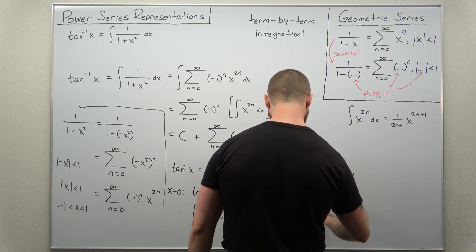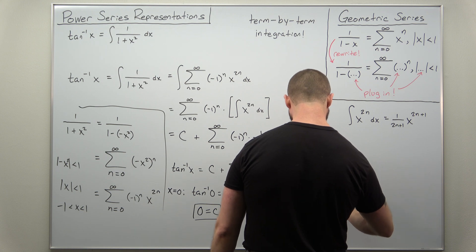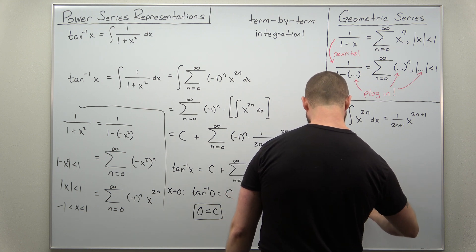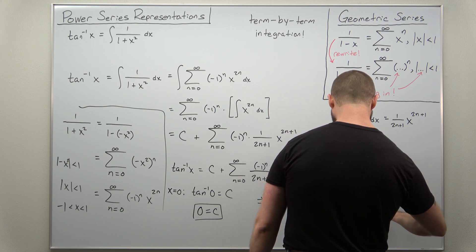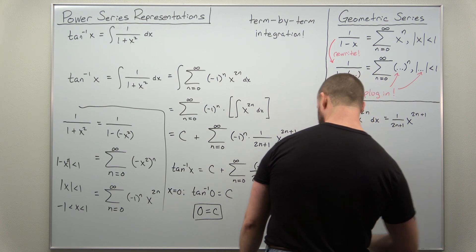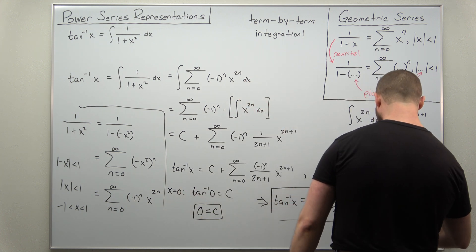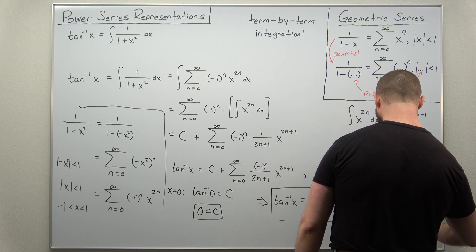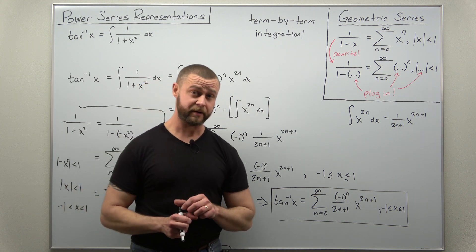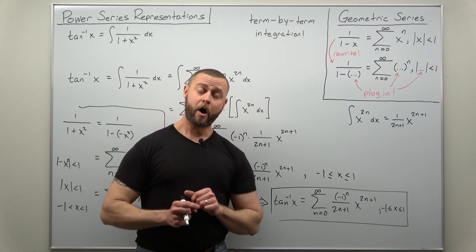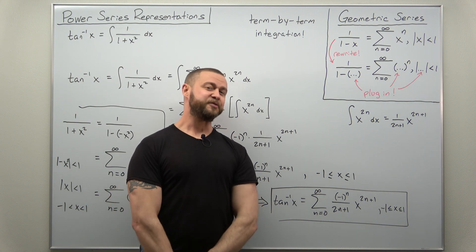And we get our power series representation for inverse tangent of x: it is the sum from 0 to infinity of negative 1 to the n divided by 2n plus 1 times x to the 2n plus 1. Don't forget the interval of convergence is between negative 1 and 1 with both endpoints included. Hope you enjoyed the video — like and subscribe.